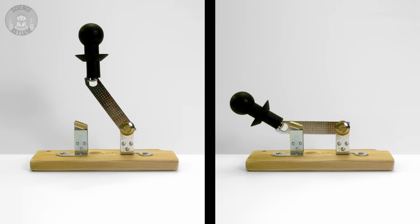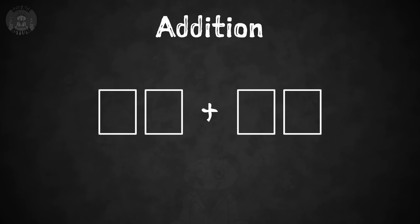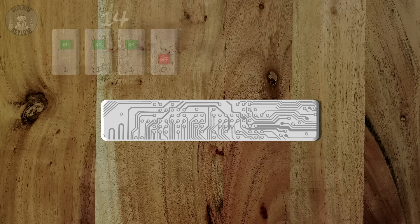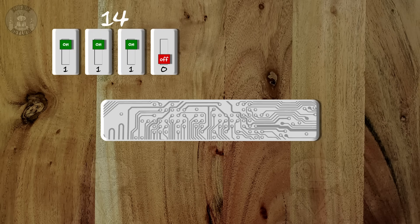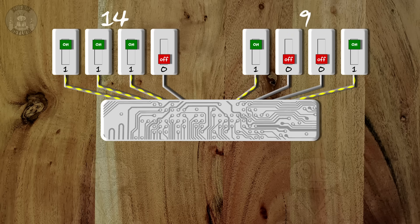Remember, a switch only has two states, which means there are only two single digit numbers — zero and one — unlike normal where we have ten single digit numbers. So we end up needing a lot more digits in binary. But that's not a problem if you have enough switches. Say you want to add two numbers together — let's say fourteen and nine. You'll need four switches for the fourteen and four switches for the nine. Each set of switches forms a kind of signal that we interpret as those numbers.